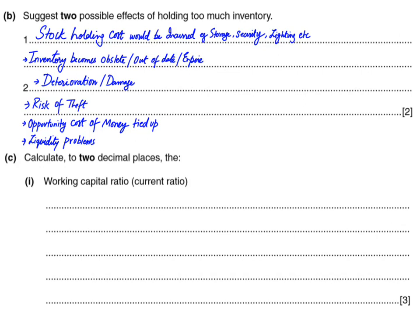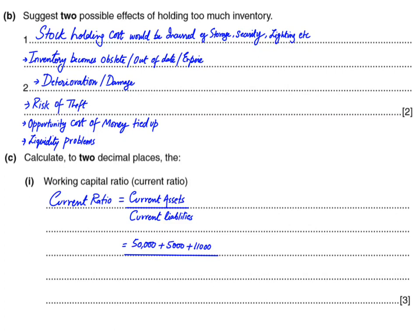Moving to the next part: we need to calculate the working capital ratio, that is the current ratio. The formula for current ratio is current assets divided by current liabilities. In an exam you can skip writing the formula but workings are important. Looking at the question for current assets: we have closing inventory of 50,000, bank balance (debit balance), and trade receivables of 11,000 — so there are three current assets.